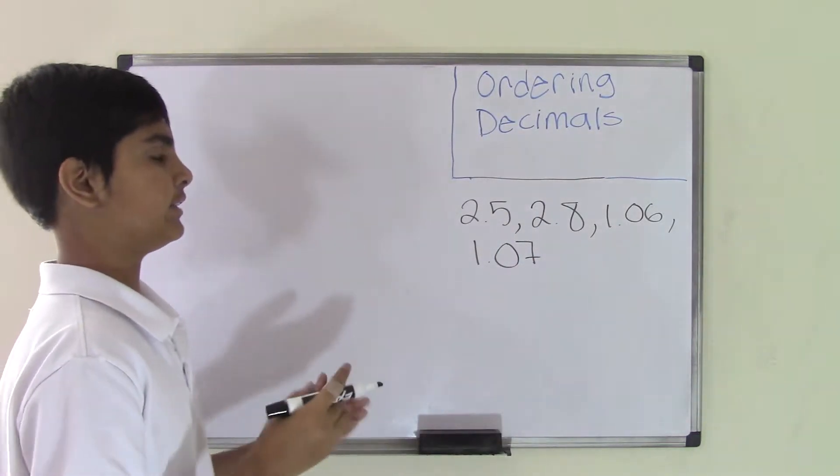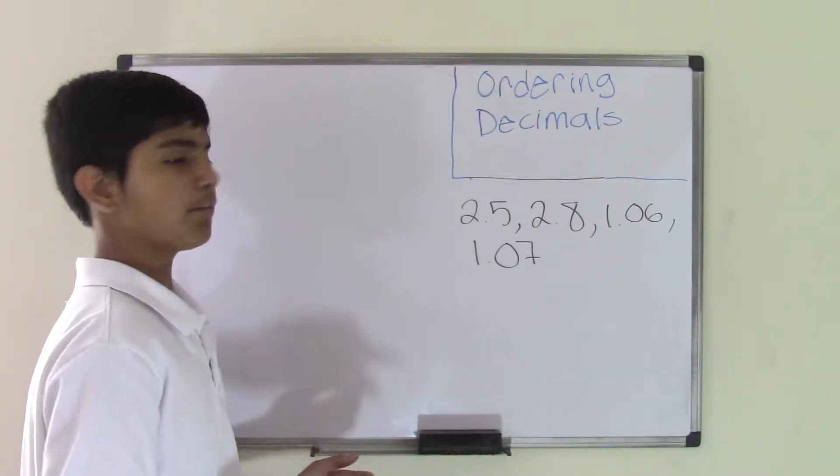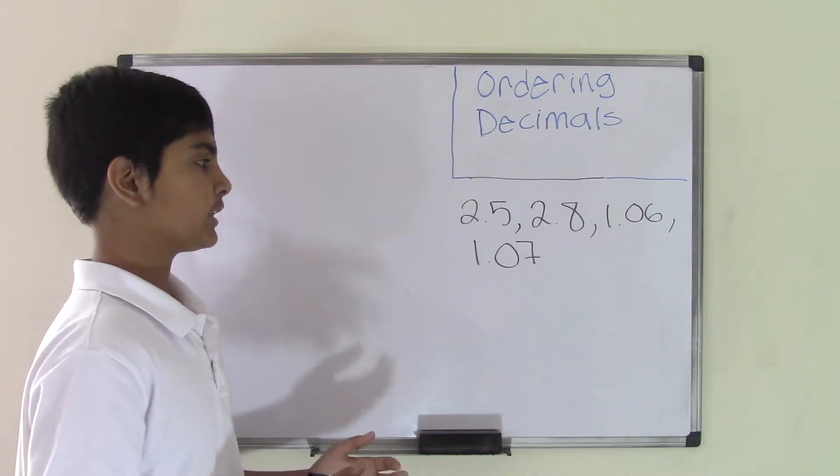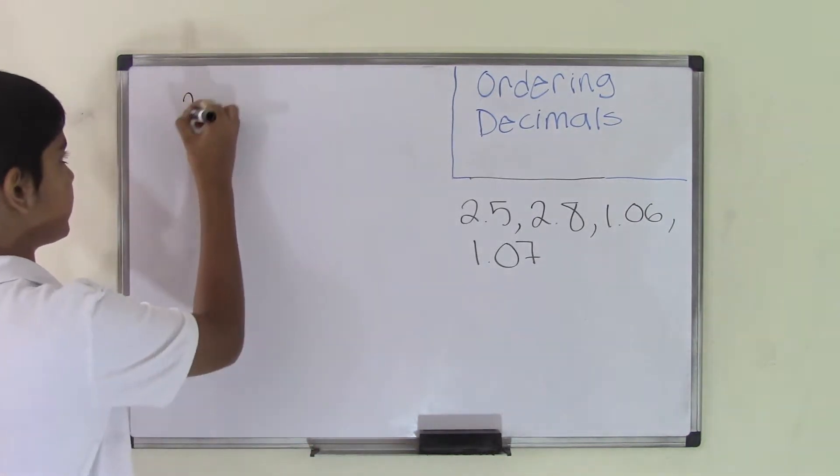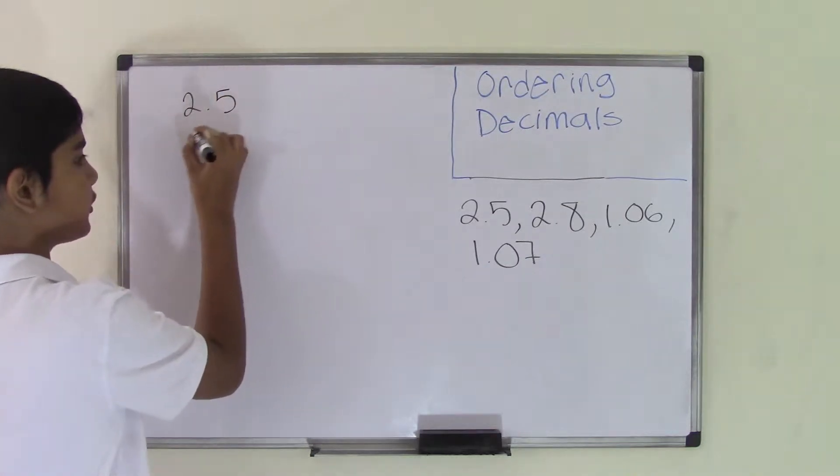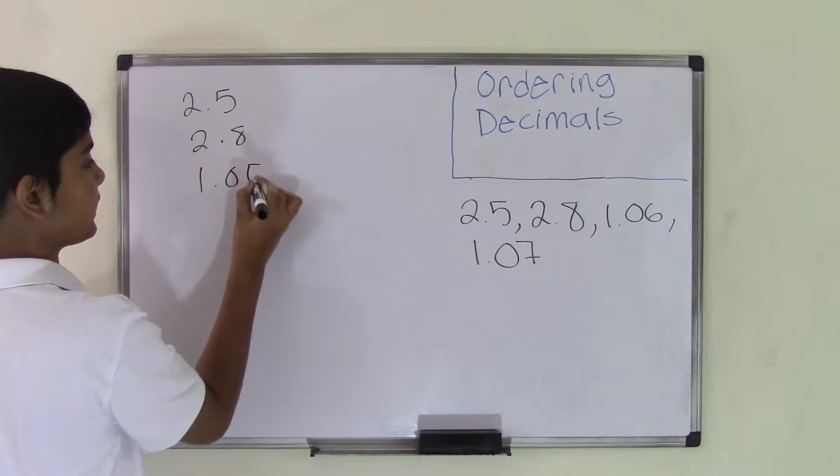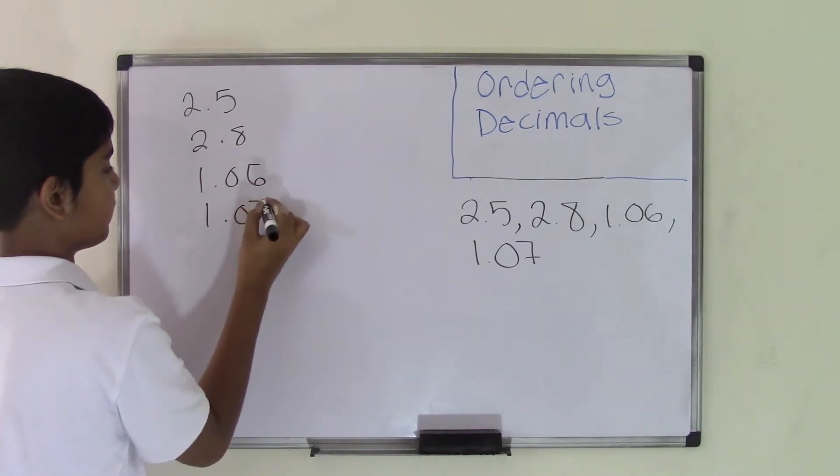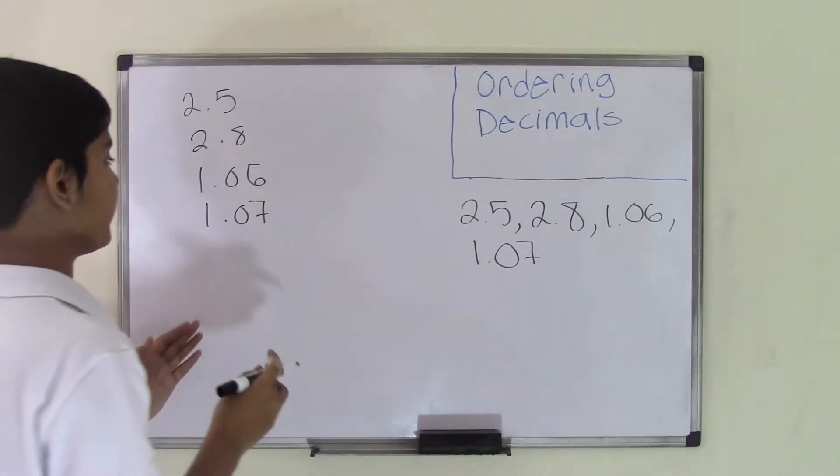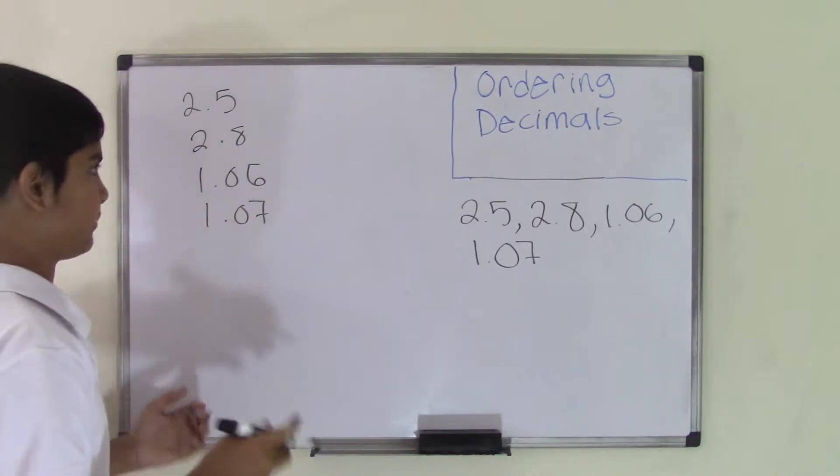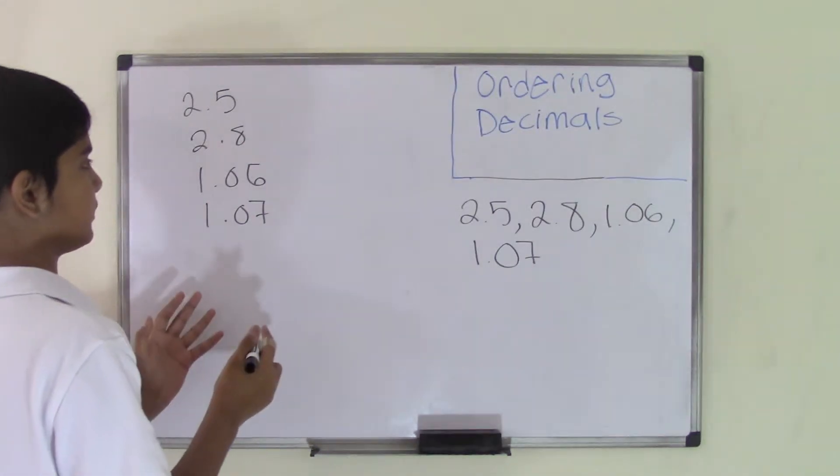We have four decimal numbers in this set and we have to order them. The first thing you need to do is put them in vertical form: 2.5, 2.8, 1.06, and 1.07. Why did I ask you to do that? Because it's way easier this way.